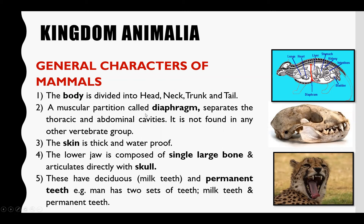ان کے اندر ایک muscular sheet موجود ہوتی ہے جسے diaphragm کہتے ہیں، جو کہ chest cavity کو abdominal cavity سے separate کرتی ہے — chest organs کو abdominal organs سے الگ کرتی ہے۔ یہ red color میں diaphragm muscle نظر آ رہا ہے۔ یہ separation کا کام کرتا ہے اور respiration میں بھی assist کرتا ہے۔ ان کی skin thick اور waterproof ہوتی ہے۔